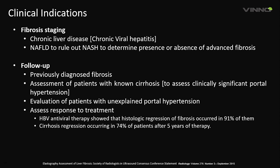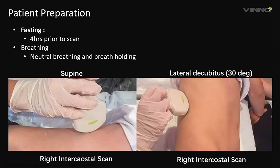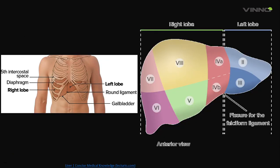Regarding patient preparation: the patient must fast for at least four hours before the examination. Position the patient supine (lying on their back) or in lateral decubitus at approximately 30 degrees. Let the patient rest for a few minutes and abduct the right arm — move it away from the chest and place it above the head — to widen the intercostal space for scanning. The patient is advised to use neutral breathing and breath-hold at neutral breathing. Do not perform a breath-hold during deep inspiration. Intercostal space scanning allows a window to obtain liver segments 7 or 8.